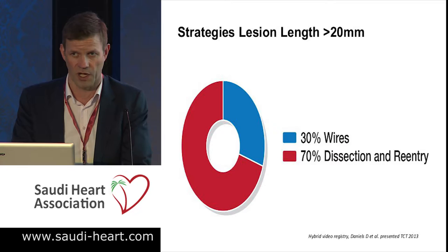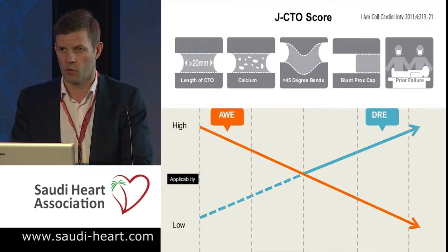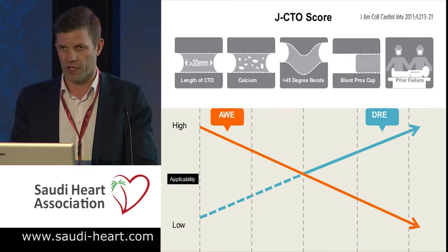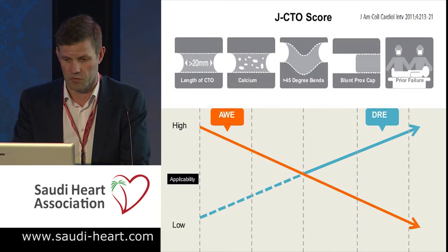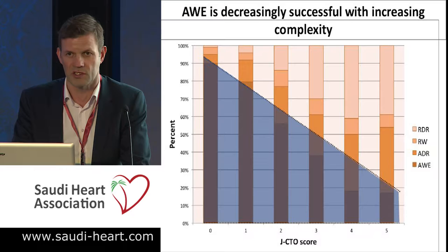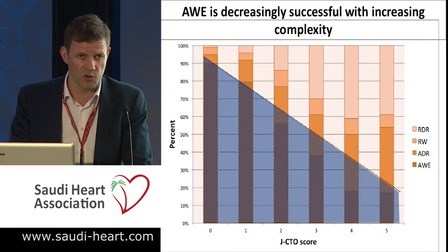That is also true with the complexity of the lesion. As our JCTO score goes up — for example, more calcification, more tortuosity, a blunt proximal cap or previous failure — we're more likely to use dissection re-entry techniques rather than antegrade wire escalation. We tend to use antegrade dissection re-entry in more complex cases, and reserve retrograde, depending on anatomy and suitability of the channels, for the most complex cases.